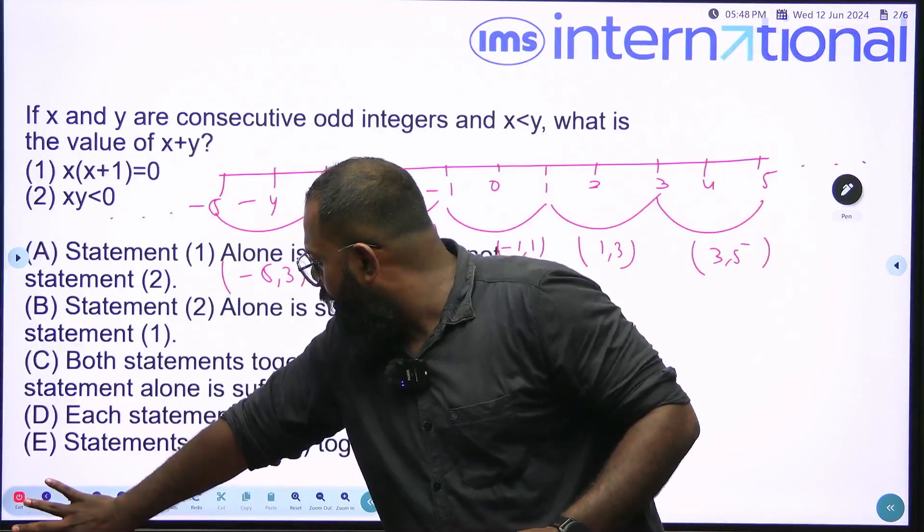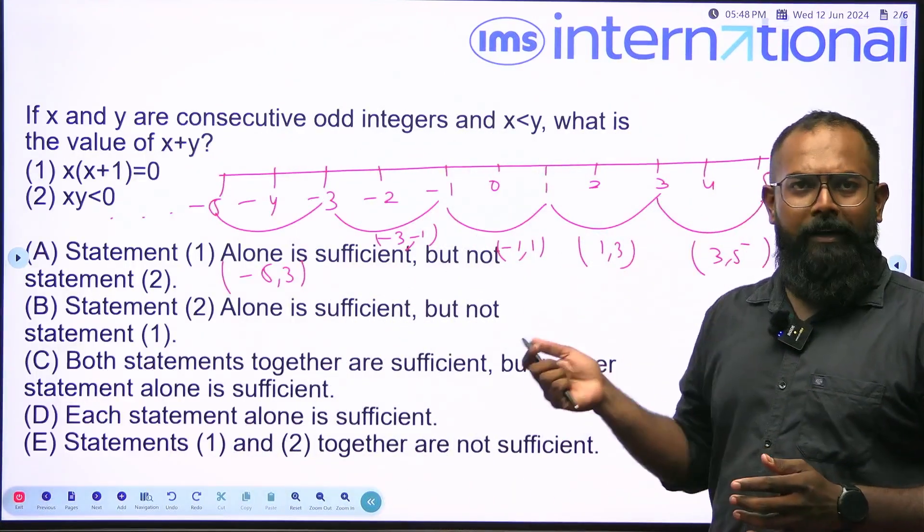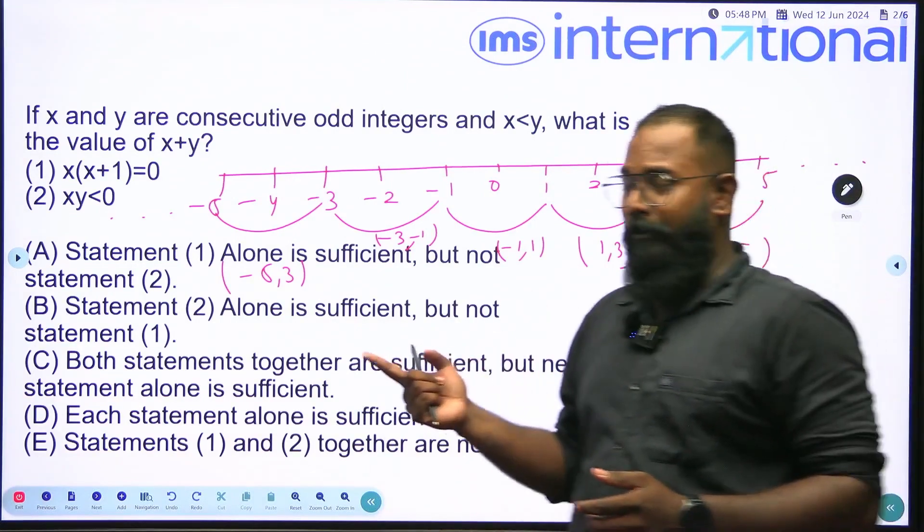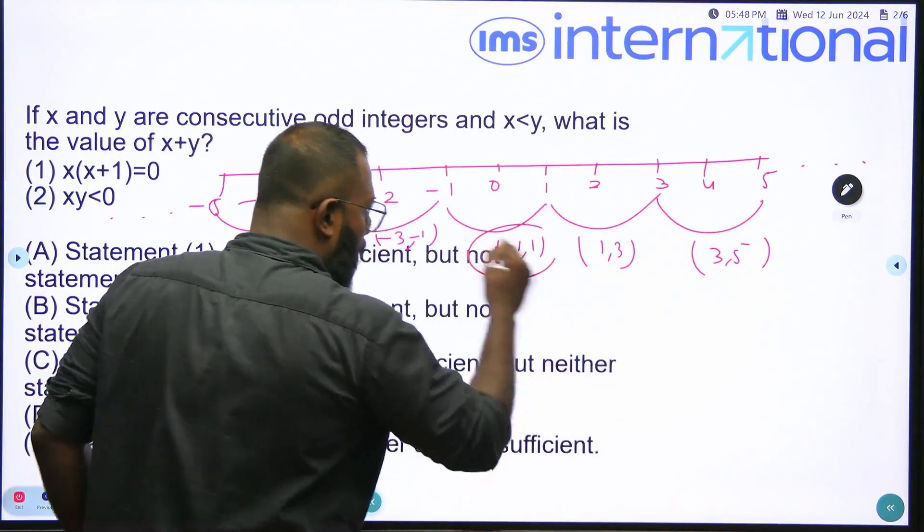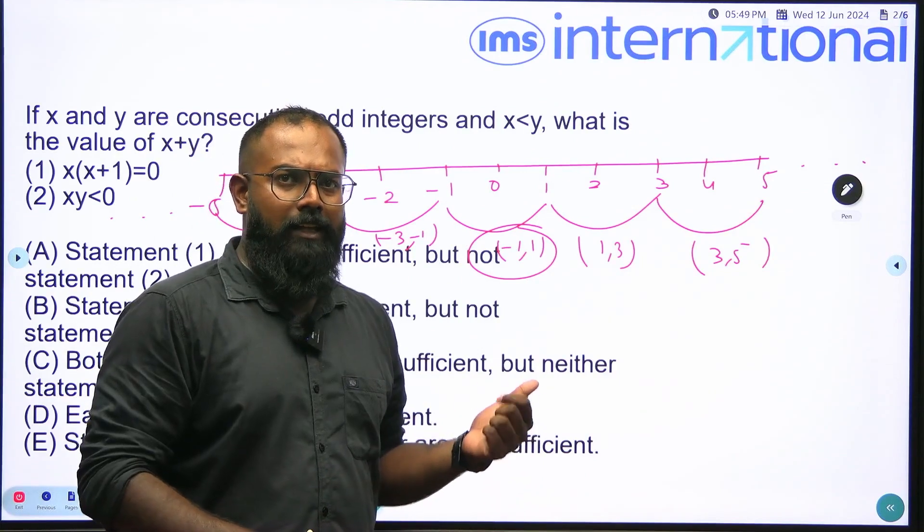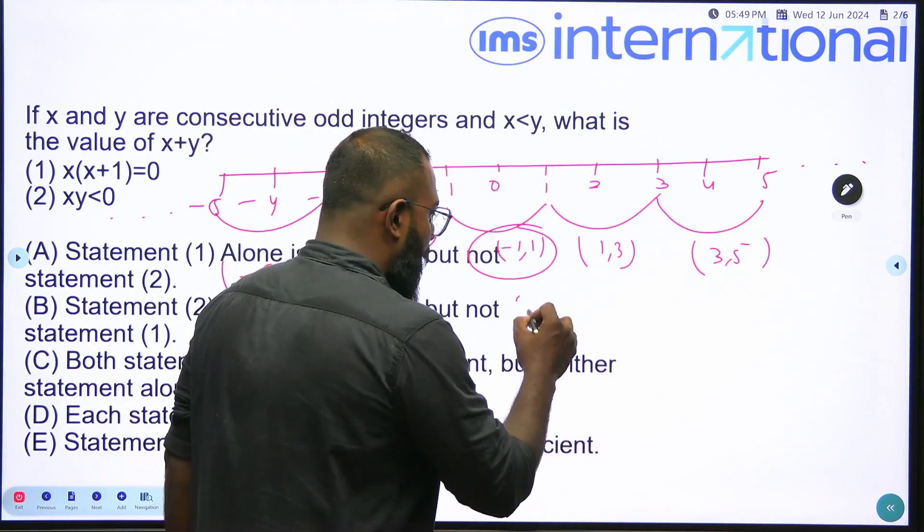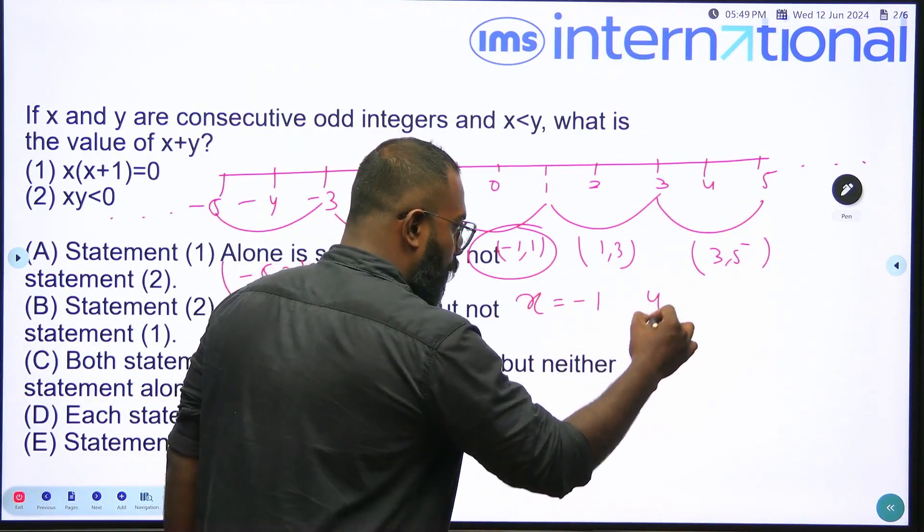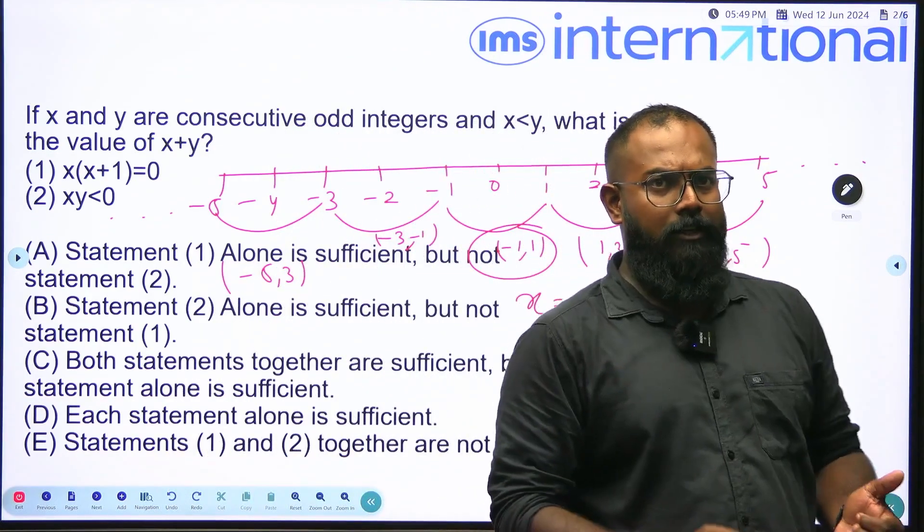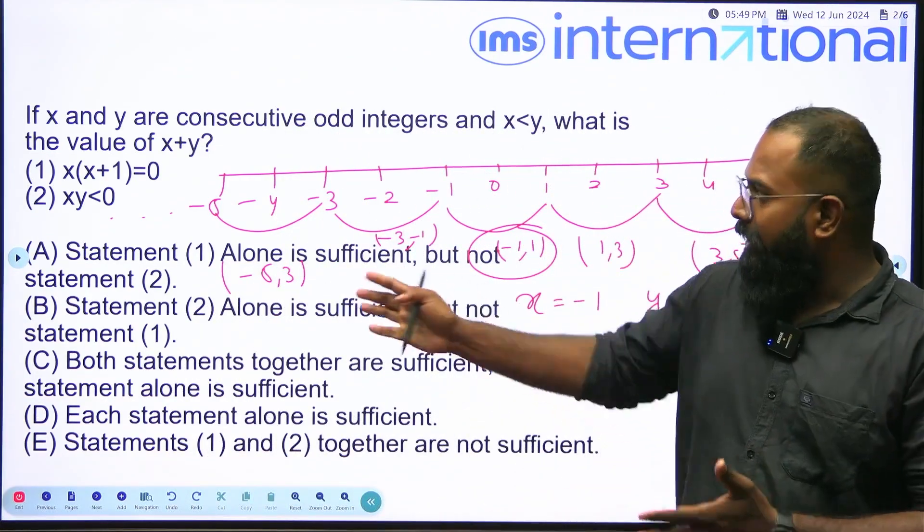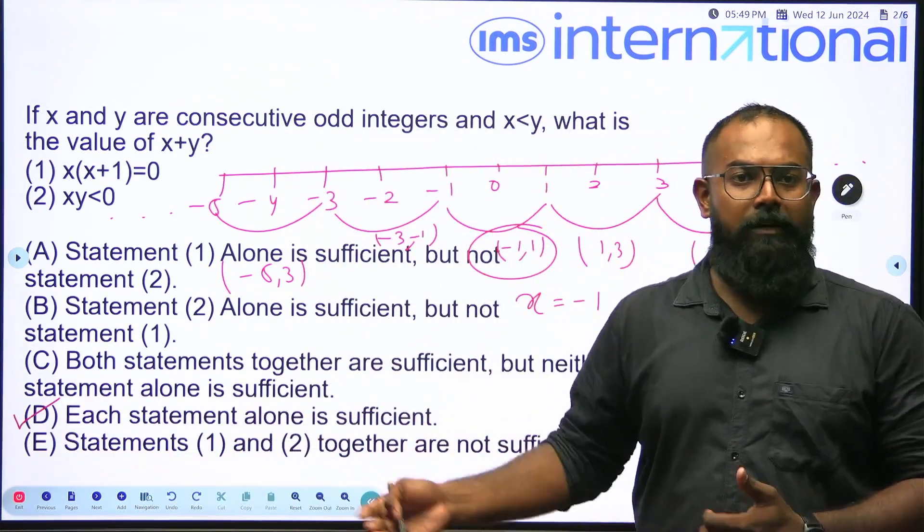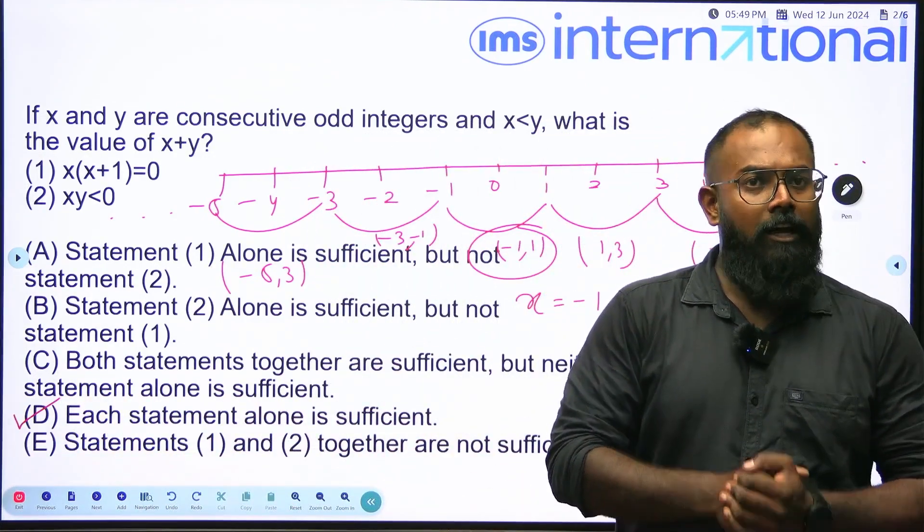Let me take you to the first slide. Try to find the pair of consecutive odd integers in which one is negative and the other one is positive. It is the only pair: negative 1 and 1 is the only pair where one of them is negative and the other one is positive. That means X is minus 1 and Y is 1. That means statement 2 is also sufficient to answer the question. That means the answer to this question is option D. That means each statement alone is sufficient to answer the question.